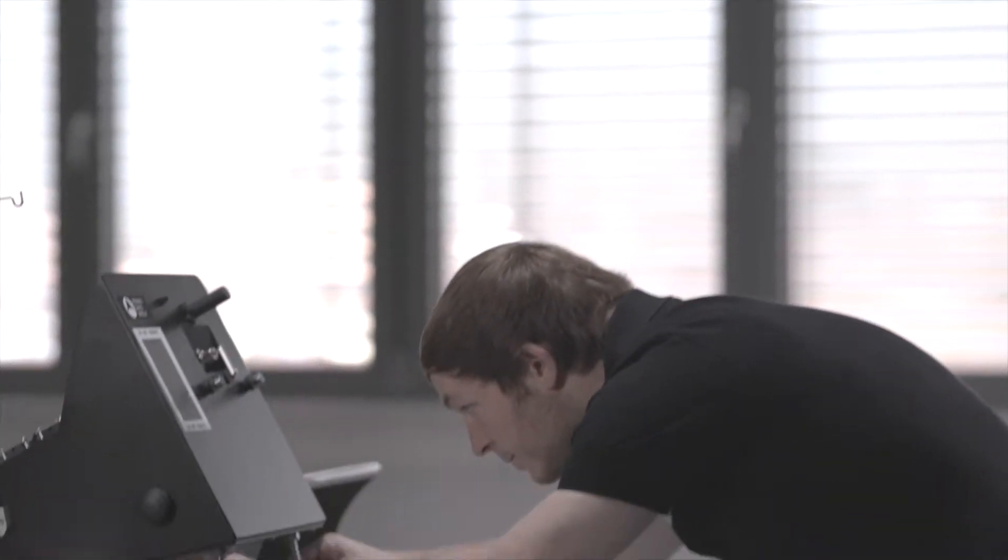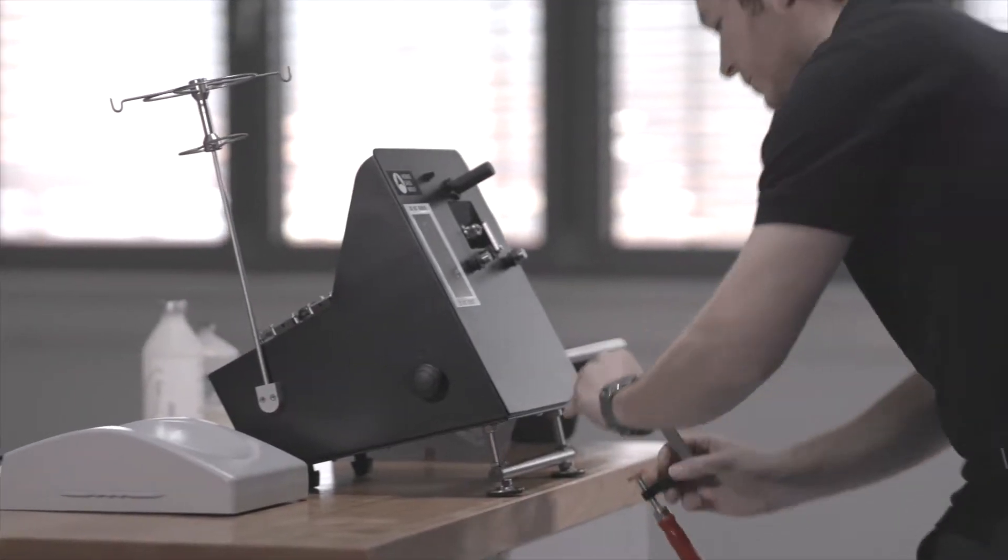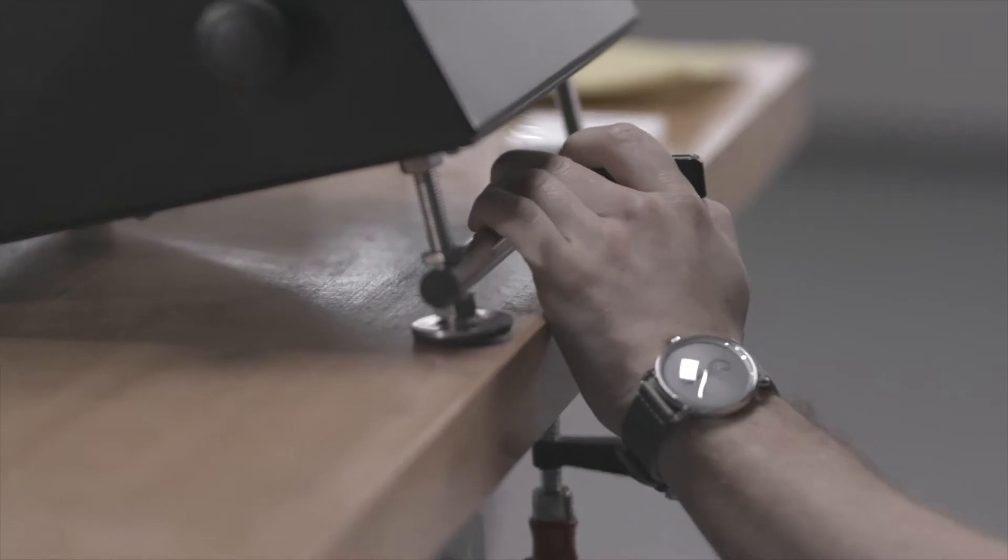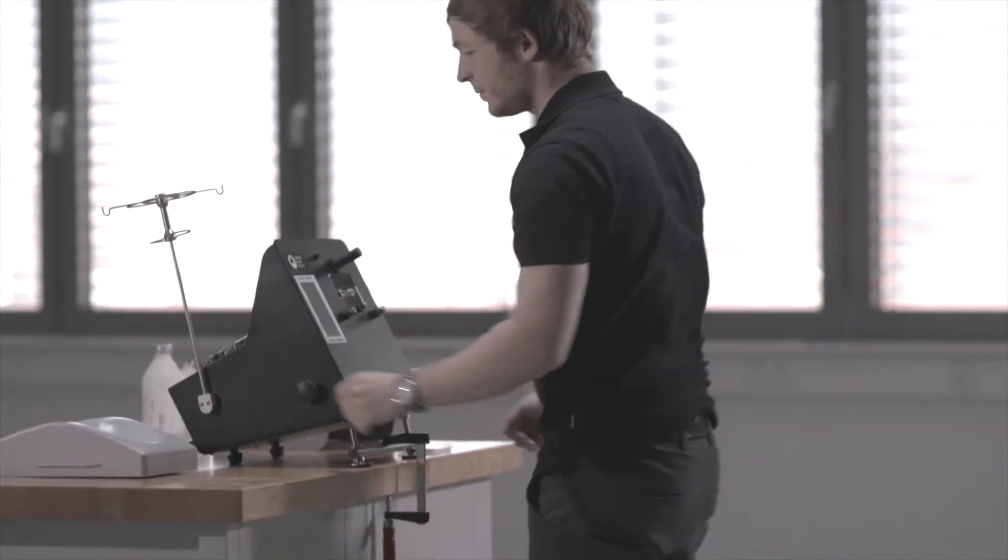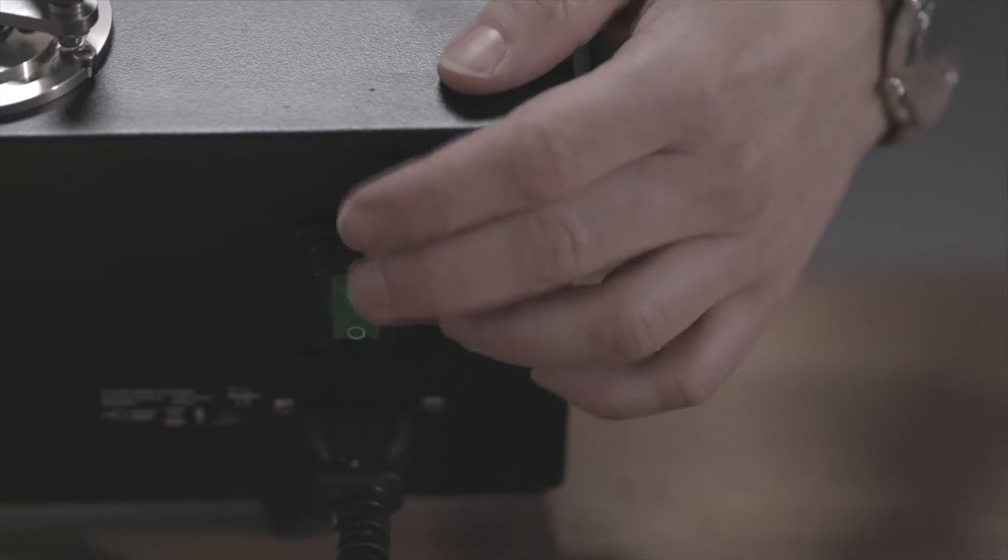The DBV should be placed on a flat and stable surface. Fix it to the platform using the fixation bar and screw clamp provided. The DBV is operated by electric power. Plug in the DBV and turn the main switch to the position on.